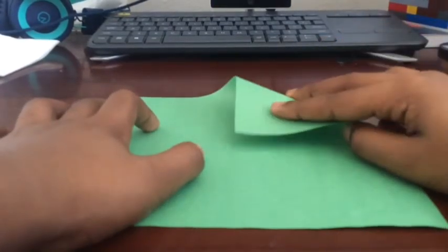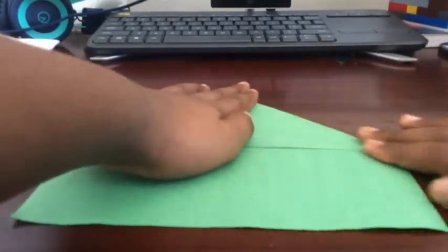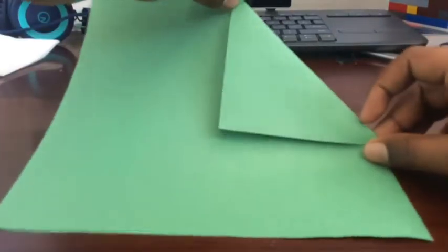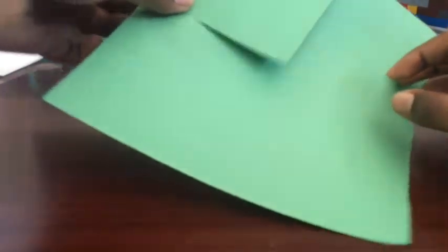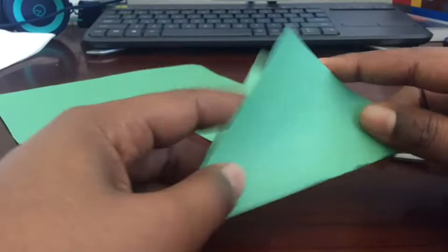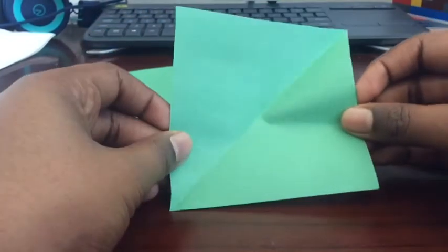So first, take the corner piece of paper and fold it down like this. After you do this, just cut it out. After you cut it, it should look something like this. I'm going to open it. It should be a square.